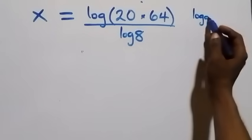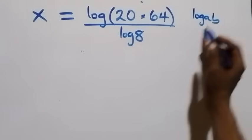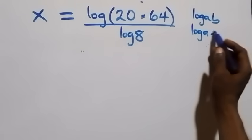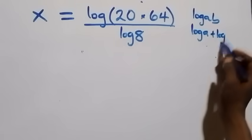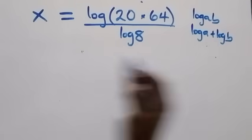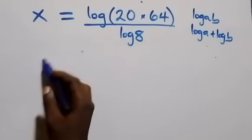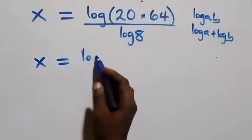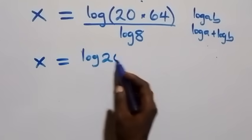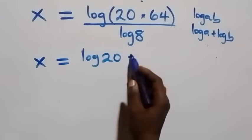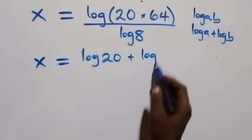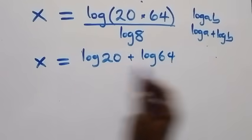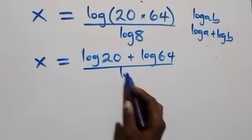This follows from the law of logarithms: log a times b is the same thing as log a plus log b. So from here we have x equals log 20 plus log 64, all over log 8.